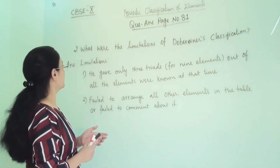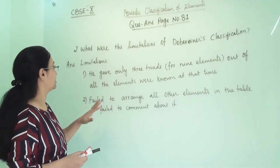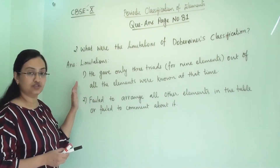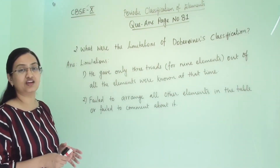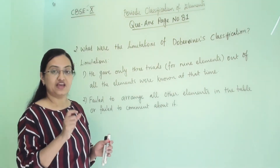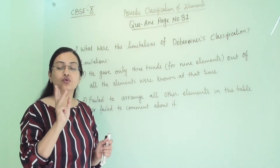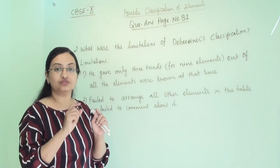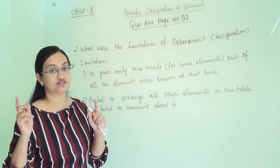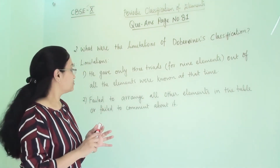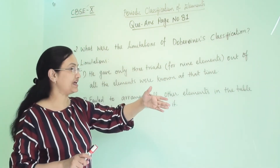Second question: what were the limitations of Dobereiner's classification? There are two limitations. First, he gave only three triads, with only three elements in each triad, so the three triads covered only nine elements in total.